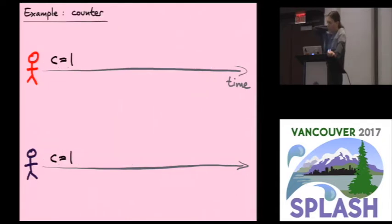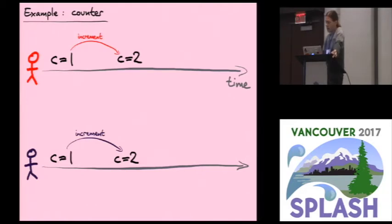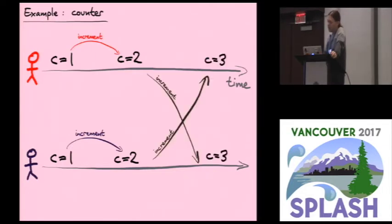The third example, we can have counters. A counter is just a natural number which you can increment or decrement. You might have two users concurrently incrementing the counter, starting from a starting state of one. What we want here is that both of those increments are preserved. We don't forget the fact that two increments happened. A sensible merged outcome is the final counter value is three, because it was incremented twice.